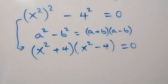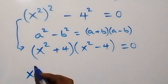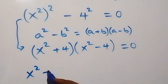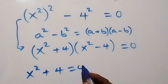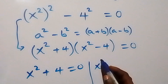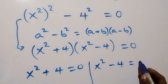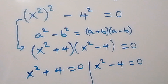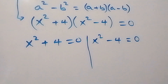From here we have two possible cases: we have x squared plus 4 equals to 0, or we have x squared minus 4 equals to 0.